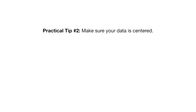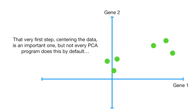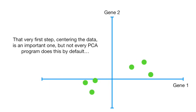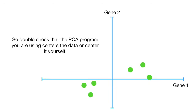Practical tip number two: make sure your data is centered. The very first step — centering the data — is an important one, but not every PCA program does this by default. If you do PCA using SVD without centering, it will still try to fit a line to the data that goes through the origin, and your PCs will not be what you expect. So double-check that the PCA program you are using centers the data, or center it yourself.